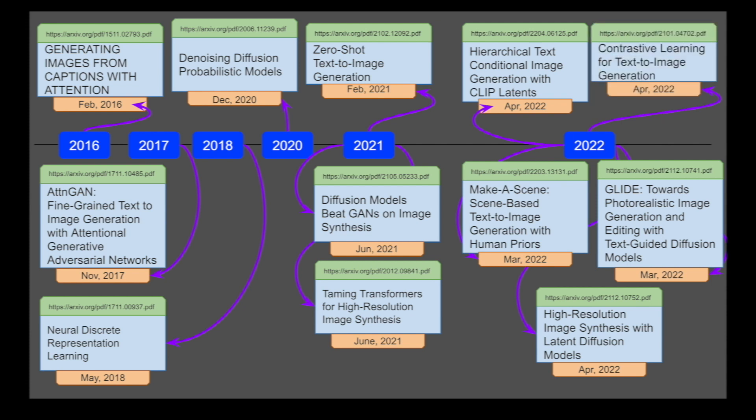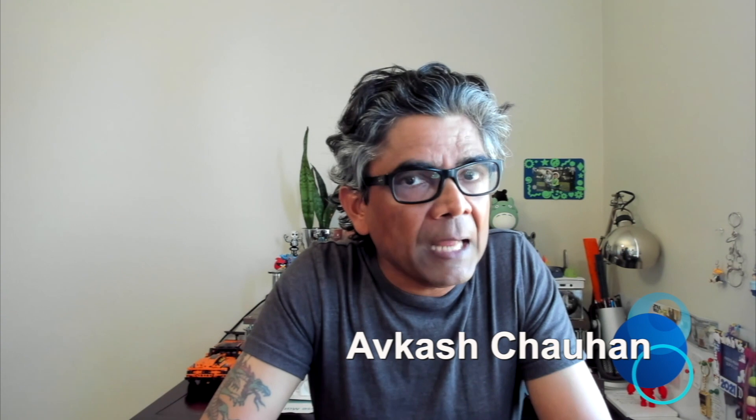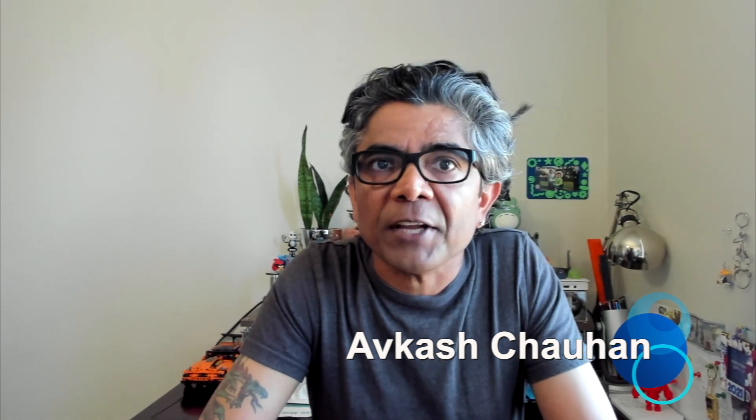In this video, we are going to cover the main contribution from each of these research papers to text-to-image AI research, the various implementations for the research papers if available, as well as some examples of why these research papers are significant among others. Hello everyone, my name is Avkash, and if you have significant interest in text-to-image research, these 12 research papers are going to be very helpful for you to learn and make yourself an expert in the field of text-to-image AI research.